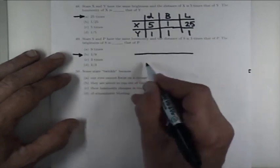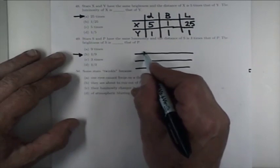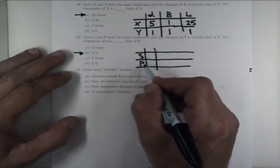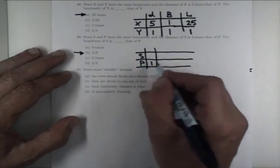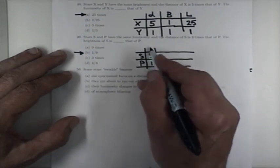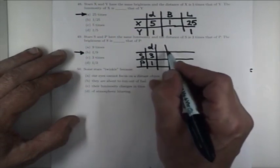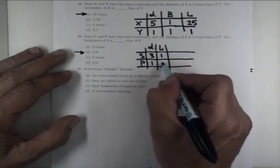You can make a little table, and now you have stars S and P instead of X and Y. You know that S is three times more distant than P, so if you pick the distance to the closer one, one, then the distance to S is three. Now you are given the luminosities of both, and they are the same, so I'll pick one. Then now I need to use this one.